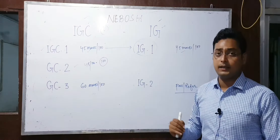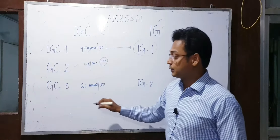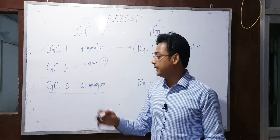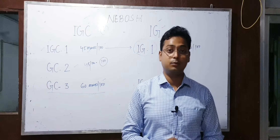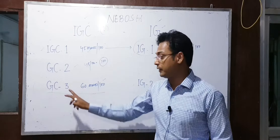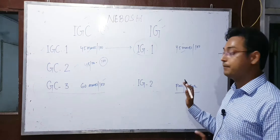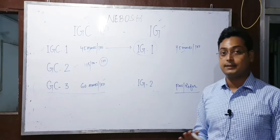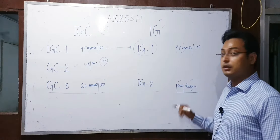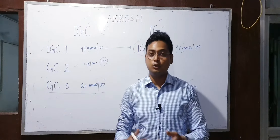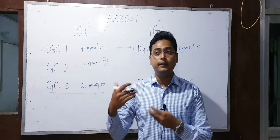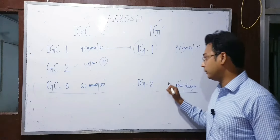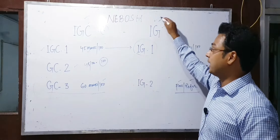Confuse hone ki zaroorat nahi hai. Pehle syllabus mein GC3 karke practical paper hua karta tha — Workplace Report Practical Assessment jo bana kar submit karna hota tha. Yeh 100 marks ka paper hota tha jisme candidate ko 60 marks pass marks hota tha. NEBOSH ne GC3 ko rename karke IG2 kar diya hai. Thoda change yahan hua hai: pehle GC3 mein marks milte the, abhi naye course NEBOSH IG mein IG2 ke liye marks nahi milte. You either pass or you fail. Bahut saare criteria hain jo report banate waqt dhyan mein rakhne hote hain; agar koi bhi criteria miss karta hai, you will fail.